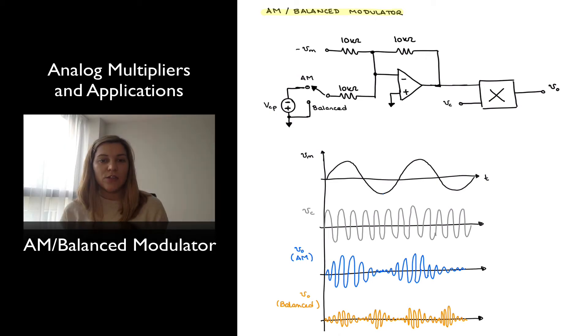Hello. So we have just seen how analog multipliers can be used for modulating schemes, AM modulation, both double sideband with carrier and suppressed carrier modulation. And here we have a circuit that can implement either one of those two schemes.